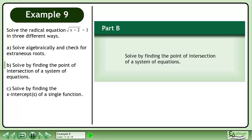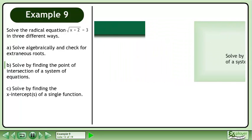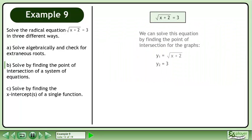In Part B, we'll solve by finding the point of intersection of a system of equations. We can solve this equation by finding the point of intersection for the graphs y1 equals the square root of x plus 2 and y2 equals 3.